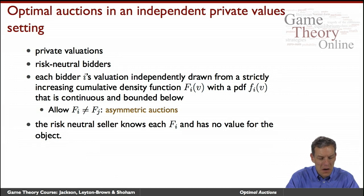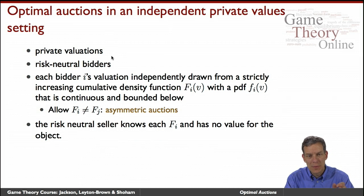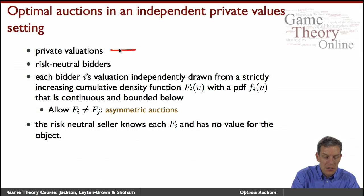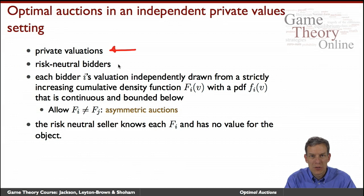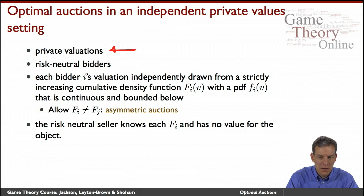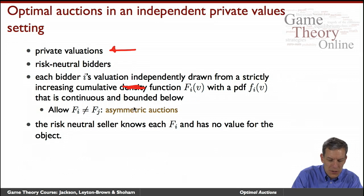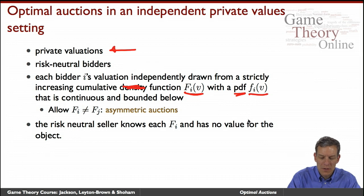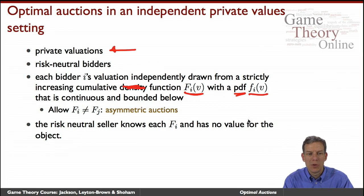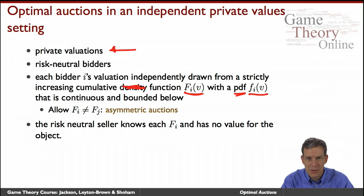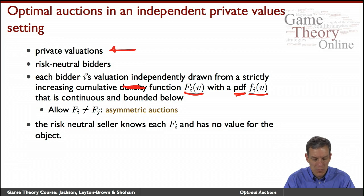What kind of setting are we going to look at? We'll keep things relatively simple. One good to be sold, private valuations — each buyer has some value for the good, and they're each risk neutral. The bidder's valuation is drawn from a distribution with CDF Fi and PDF density function fi, which is continuous and bounded below. So we have nicely defined continuous distributions over values, such as a uniform distribution or other similarly well-shaped distributions.